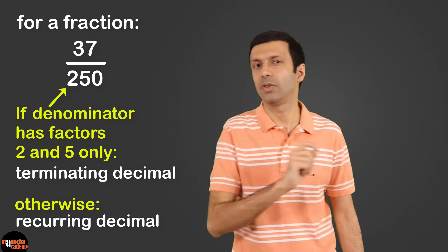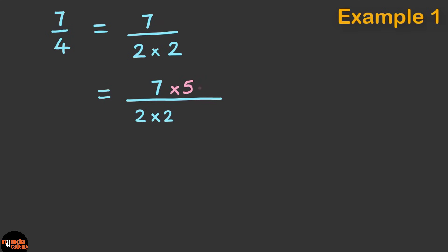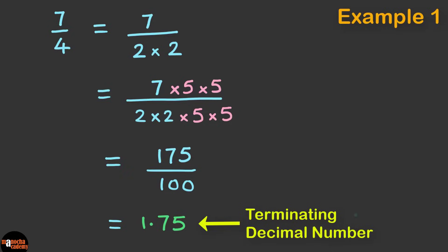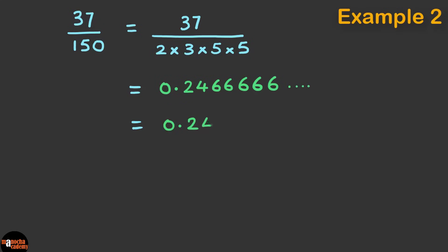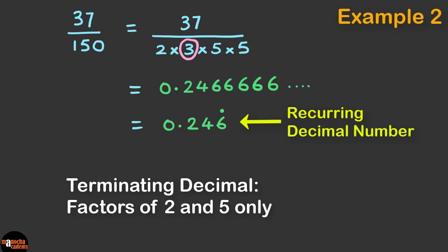Let me pull up some examples to illustrate this. Starting with 7 by 4 — the factors of denominator 4 are 2 × 2. Our goal is to convert the denominator into multiples of 10, so we multiply 5 × 5 in the numerator and denominator, giving 175 by 100, which is 1.75 — a terminating decimal. But if we take 37 by 150, the factors of the denominator are 2 × 3 × 5 × 5, and on dividing we get 0.24666 and so on — a recurring decimal — because there is a factor of 3 in the denominator. For a terminating decimal you need factors of 2 and 5 only.